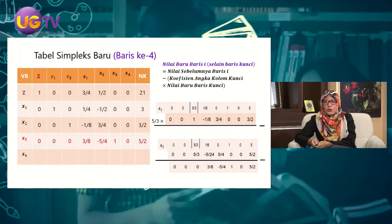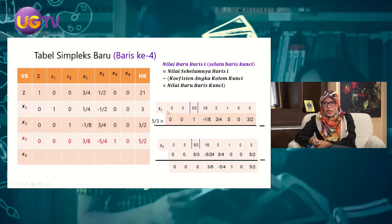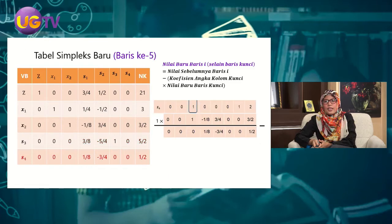Untuk baris kelima, koefisien angka kolom kuncinya adalah 1. Karena 1 dikali berapapun hasilnya tidak berubah, kita langsung kurangkan. Hasilnya baris kelima baru: 0, 0, 0, 1/8, -3/4, 0, 0, dan 1/2.